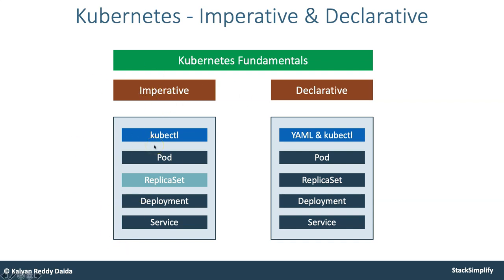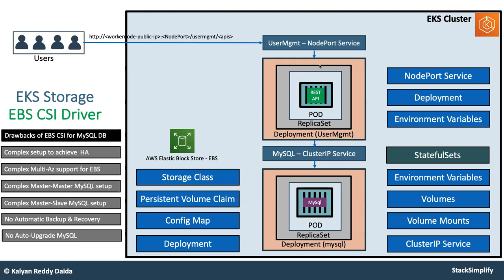We will get a full understanding of Kubernetes from pods, replica sets, deployments, and services perspective. Then we will jump into the main course, starting with EKS storage with EBS CSI driver — Elastic Block Store. As part of that, we will learn how to write a deployment, a MySQL Cluster IP service or Node Port service, environmental variables, volumes, volume mounts, and everything related to that section. You will do live template writing here and provision these things from your Kubernetes manifest.